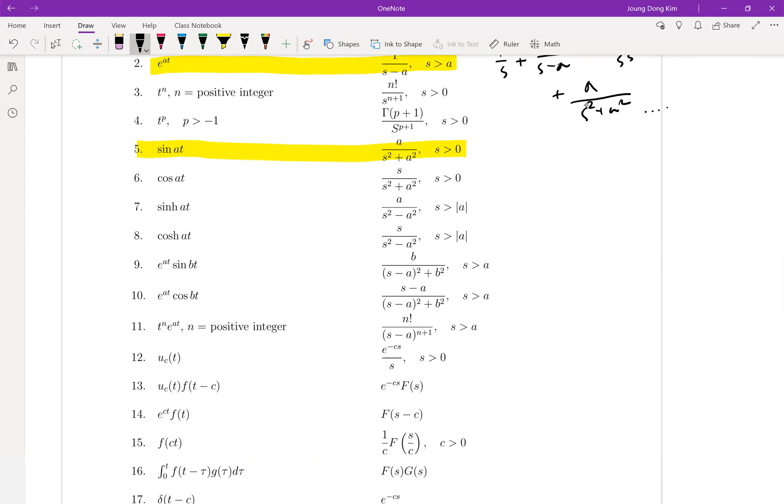So n is 2 and your a is 1, then it will be t to the n times e to the at. So let me come back.